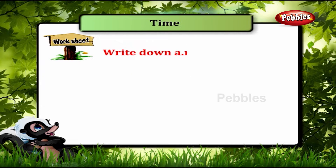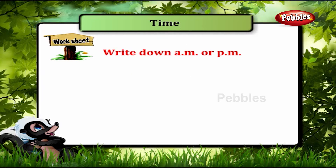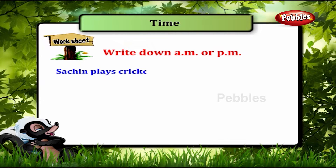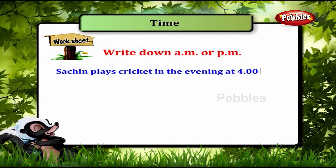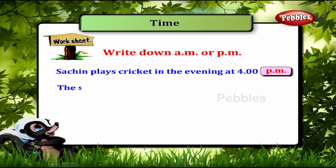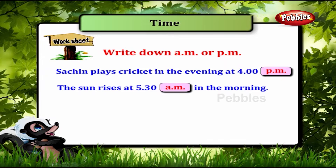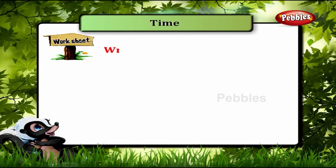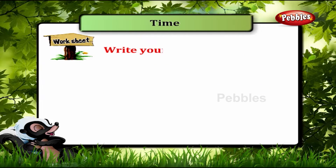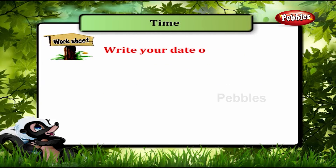Write down A.M. or P.M. Sachin plays cricket in the evening at 4:00 P.M. The sun rises at 5:30 A.M. in the morning. Write your date of birth.